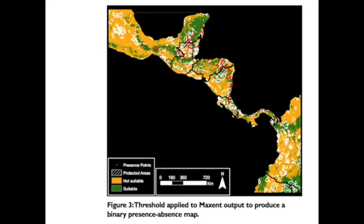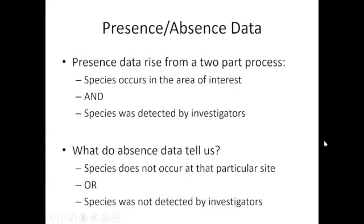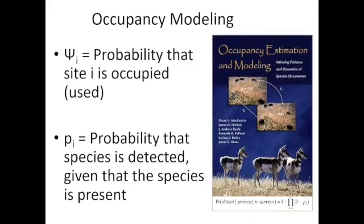If you're using citizen science data from iNaturalist, you might be biasing your inference toward areas where people live, popular hiking areas, or national parks. Presence-absence data arise from a two-part process: presence data arise when a species occurs and was detected, but absences are ambiguous — either the species doesn't occur there, or it does occur but was not detected by investigators. That's where occupancy models come in.